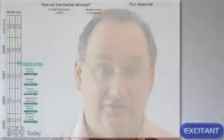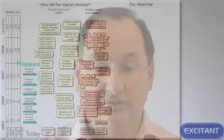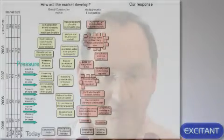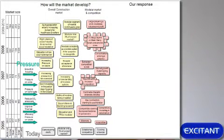As they did so they thought about the pressures on the market and identified a whole collection of these: growth in the housing market, pressures on build costs, pressure to reduce CO2 emissions, improving thermal efficiency, reducing waste on site, and those sorts of things. Here's the theme of how they saw the overall construction market developing from today — the modular segment shown in gray at the bottom is only one percent of the market, potentially growing to around three percent by 2009. This was their view of how things would develop at the pace they could see.